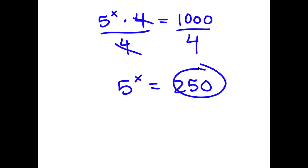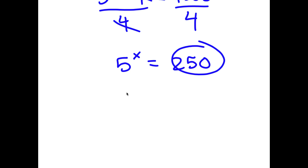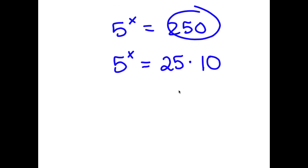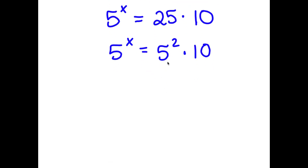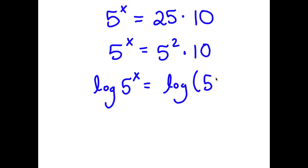Now, 250, I can rewrite this as 25 times 10. So I have 5 to the power of x is equal to 25 times 10. And 25 is the same thing as 5 squared. So now I have 5 to the power of x is equal to 5 squared times 10. What I'm going to do is take the log on both sides. So now I have log of 5 to the power of x is equal to log of 5 squared times 10.